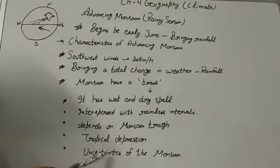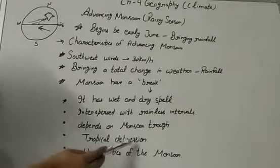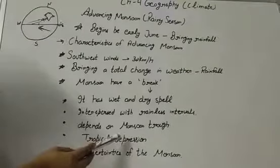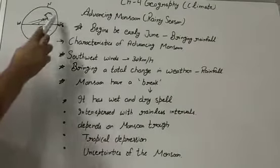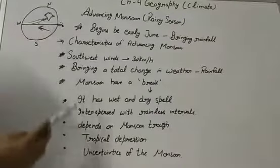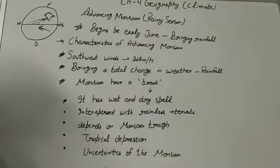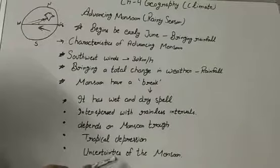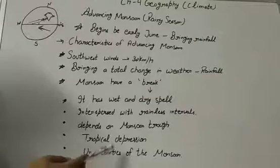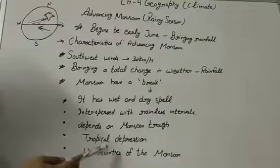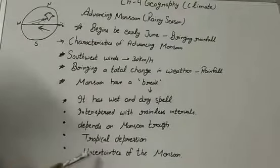The frequency and intensity of tropical depressions also determine the amount and duration of monsoon rains. These depressions form at the head of the Bay of Bengal and cross over the mainland, following the axis of the monsoon trough. The monsoon is also known for its uncertainties — the alternation of dry and wet spells differs in intensity, frequency, and duration. It causes heavy floods in one part while being responsible for drought in other parts, and is often irregular in its arrival and retreat.